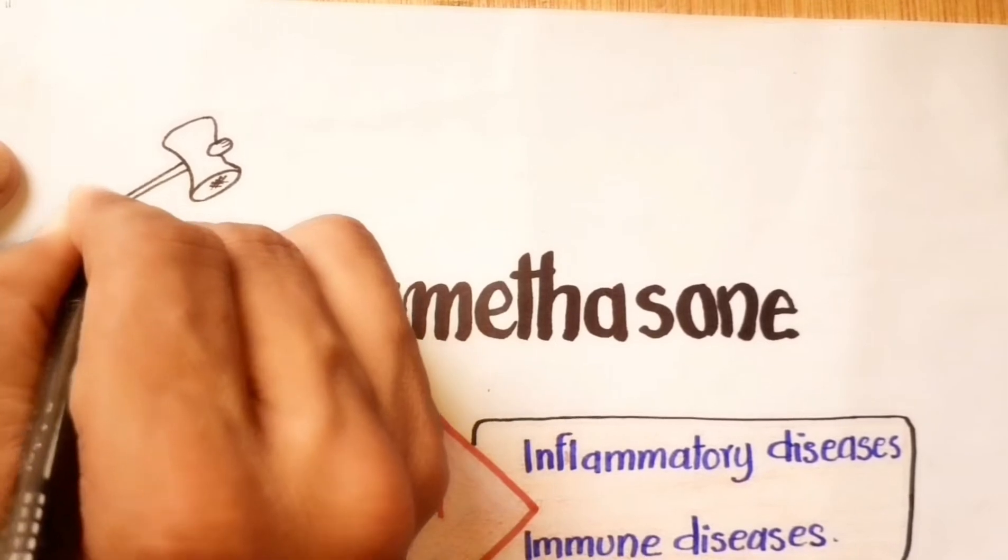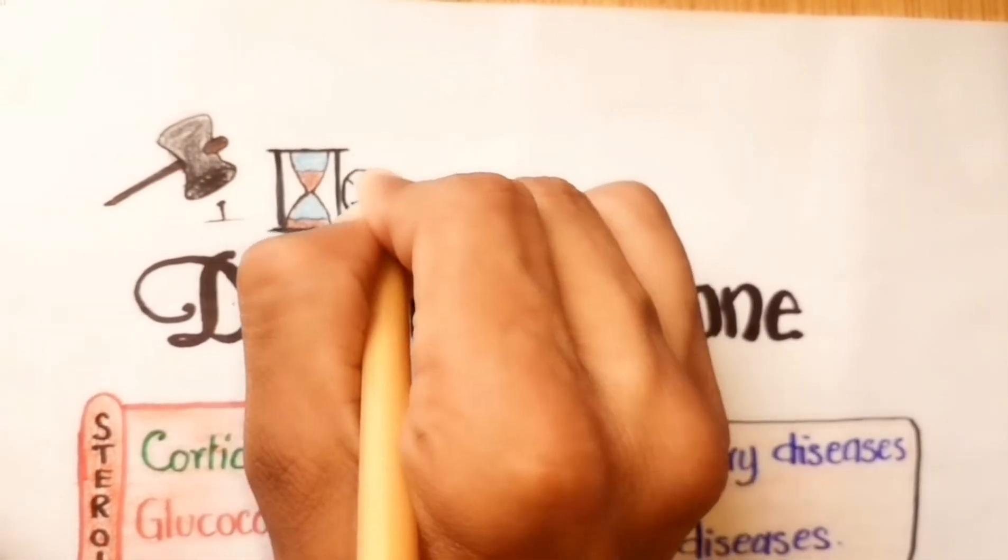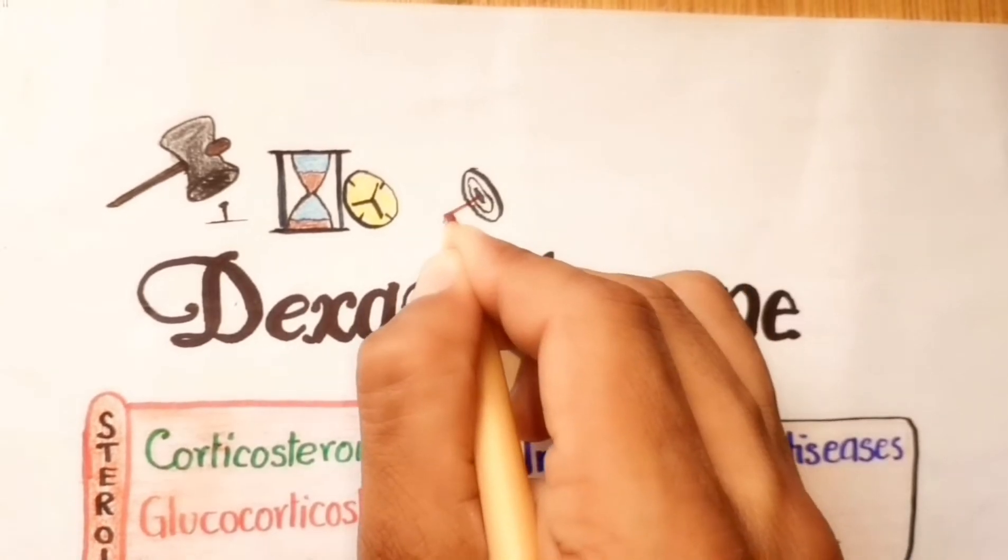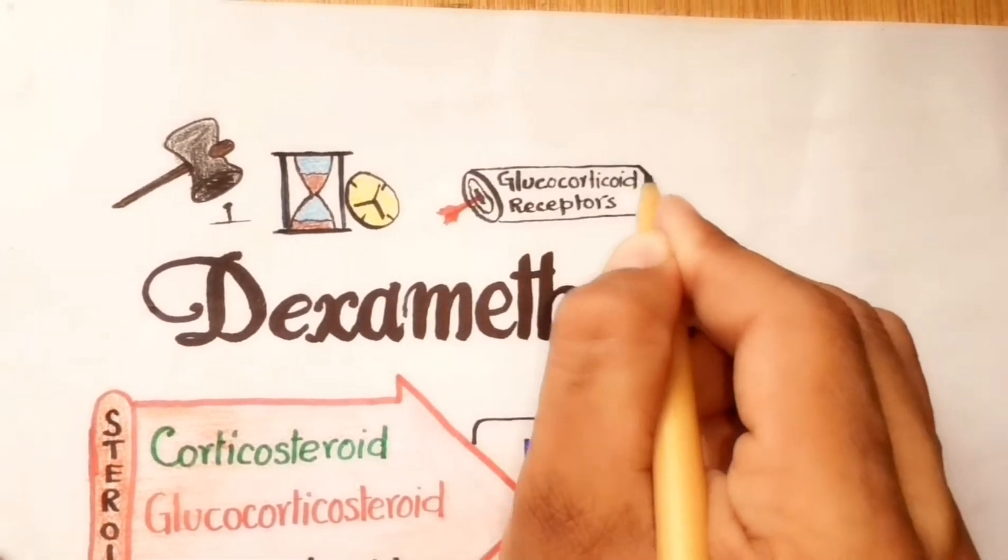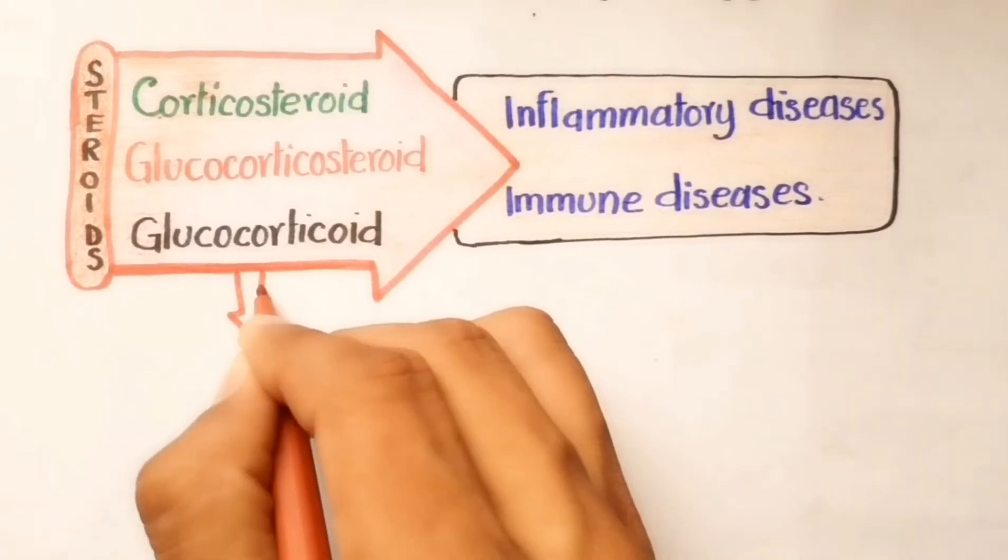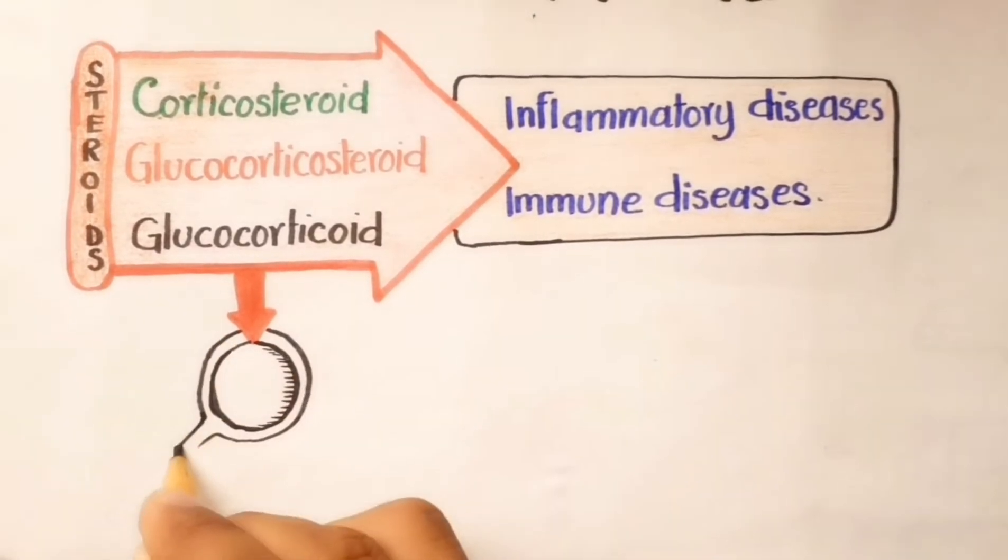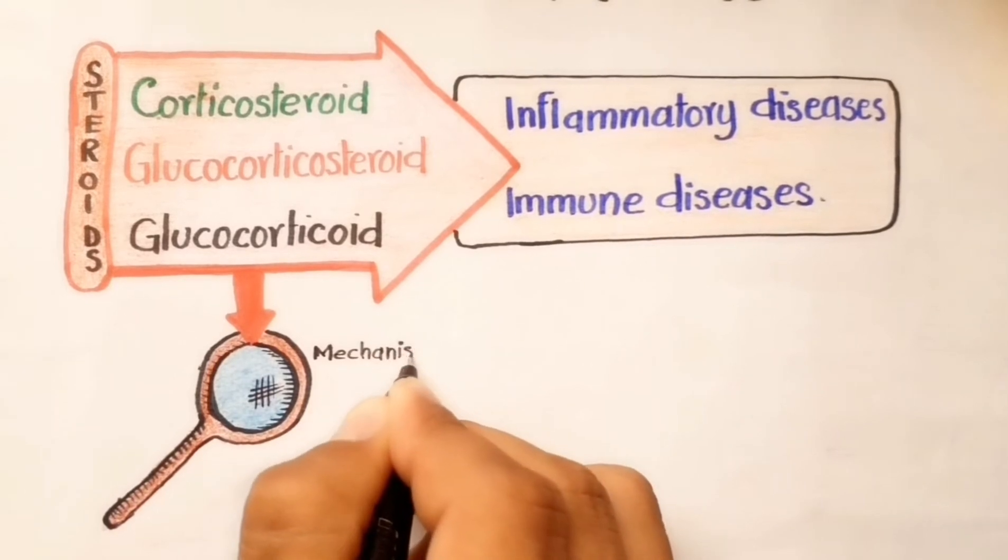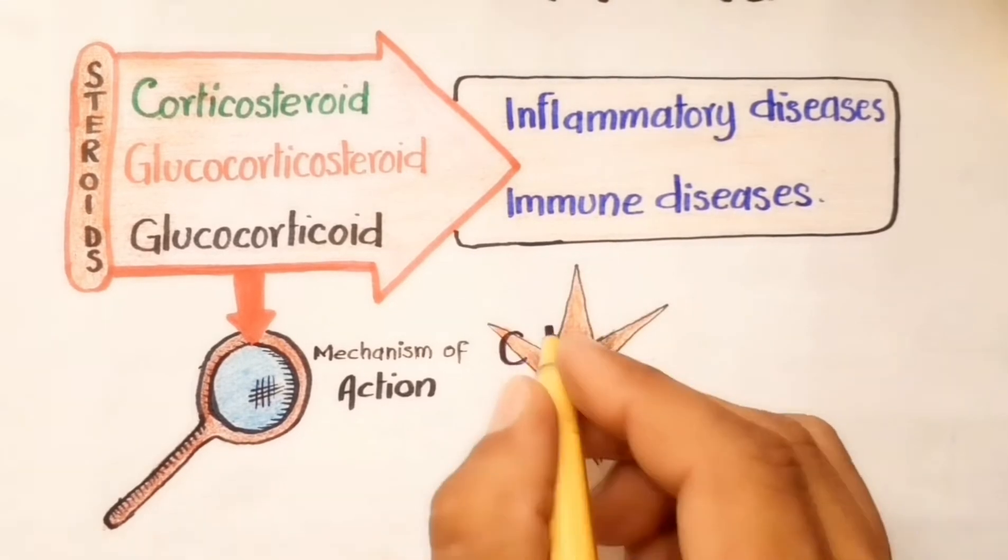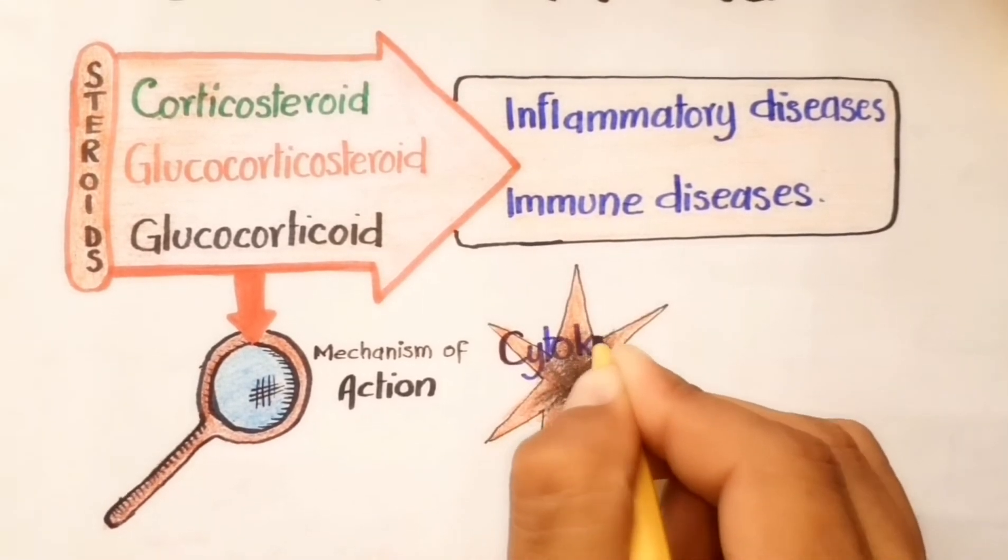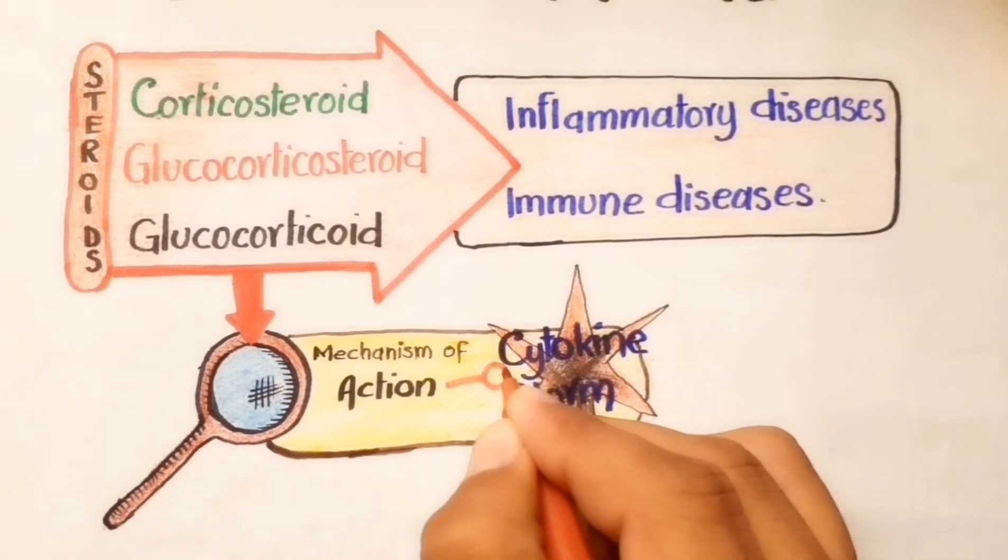Dexamethasone is very potent, long-acting, and highly selective to glucocorticoid receptors compared to mineralocorticoid receptors. Being a steroid, it has diverse actions, but here we will focus on its mechanism of action leading to cytokine storm diminishing properties, for which it is approved to be used in SARS-CoV-2 infected patients.